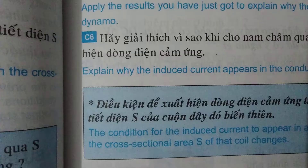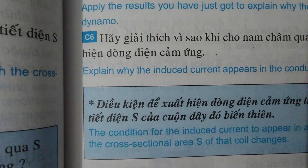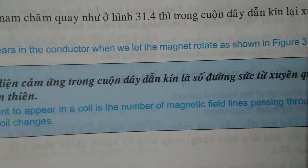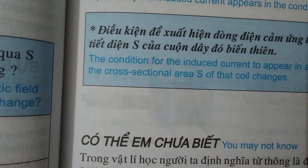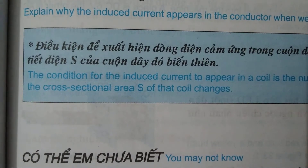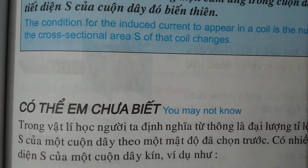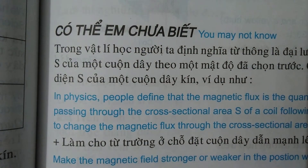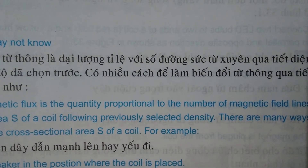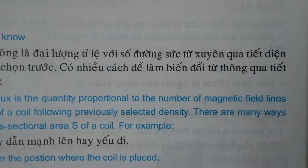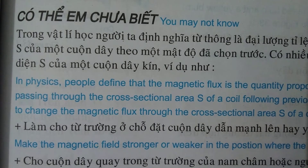The condition for induced current to appear in a coil is that the number of magnetic field lines passing through the cross-sectional area S of that coil changes. In physics, people define magnetic flux as the quantity proportional to the number of magnetic field lines passing through the cross-sectional area S of a coil.